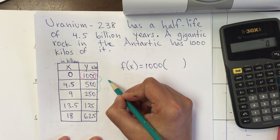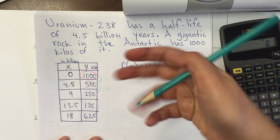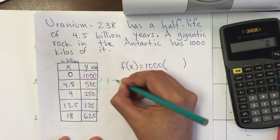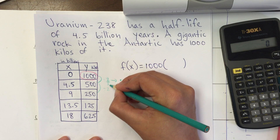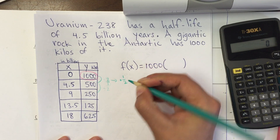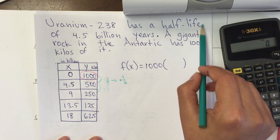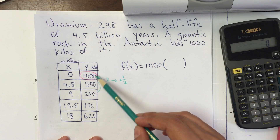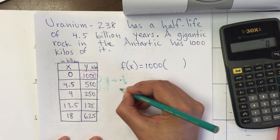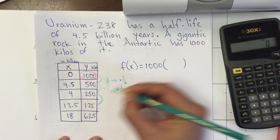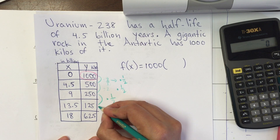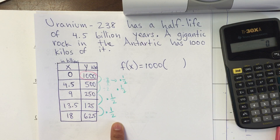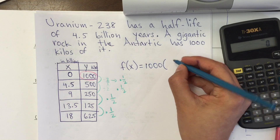Remember that dividing by 2 is the same as multiplying by the reciprocal, which is 1/2. So half-life means you have 1/2 of what you had before. Dividing by 2 is the same as multiplying by 1/2, and from step to step you're multiplying by 1/2. So my base here is going to be 1/2.